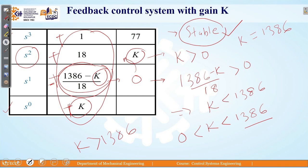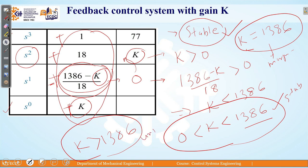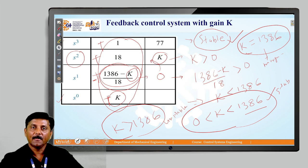Depending upon the range of gain K: when 0 < K < 1386, the system is stable; when K = 1386, the system becomes marginally stable; and when K > 1386, the system becomes unstable. By this way, we can say that system stability can be defined through the concept of all three different cases. We have defined by Routh stability criterion, just by observing the first column and with the consideration of all three cases, how the system can be defined as a stable, unstable, or marginally stable system. Thank you. We will meet in the next lecture with the root locus technique. Good day.